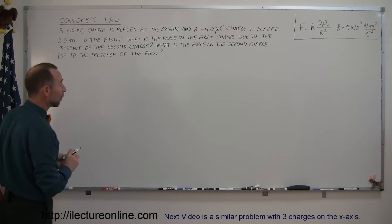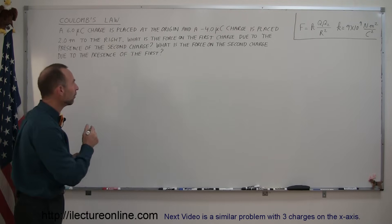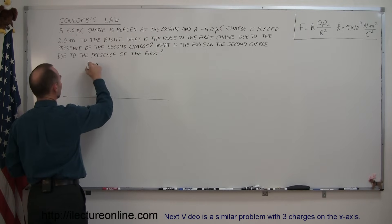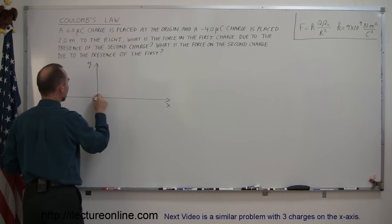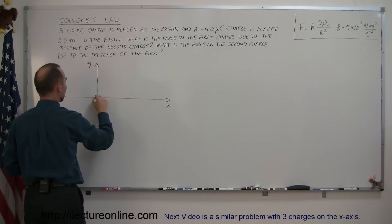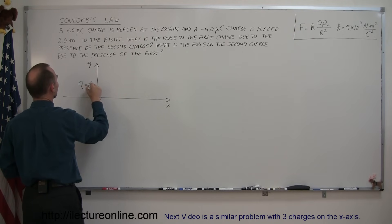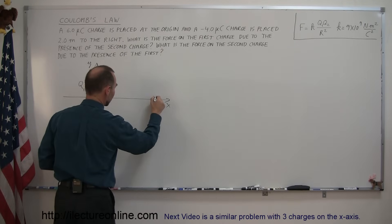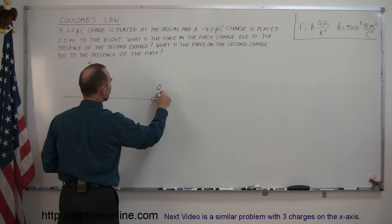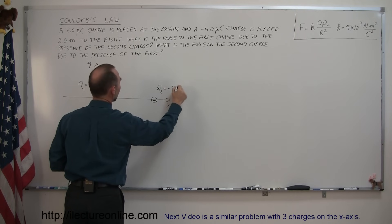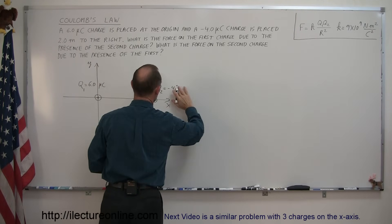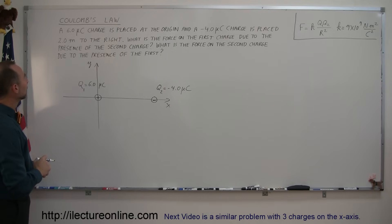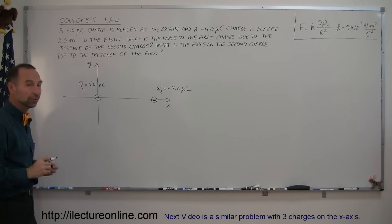We want to draw a diagram to get a visual picture of how to do this problem. Let's draw a coordinate system with the y-axis and x-axis. We place a positive charge at the origin, call it q1, equal to 6.0 micro Coulombs. Then we have a second charge to the right — a negative charge — call that q2, equal to minus 4.0 micro Coulombs. We need to find the forces on each charge due to the presence of the other.